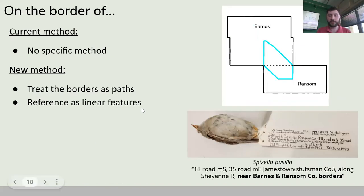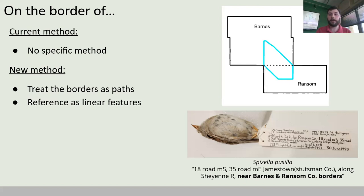Finally, we have On the Border Of. Here we have a specimen described as near Barnes and Ransom County borders — a common locality description. When you're at the intersection of two municipal boundaries, very rarely is there a line drawn in the sand telling you exactly where one county stops and another starts. I've taken the linear feature that is the literal intersection of the Barnes and Ransom County border and georeferenced that. Using the blue shape, we can literally define the space that is closer to the border of the two counties as opposed to the other boundaries of the counties themselves. This gives shape to an amorphous concept that didn't have a method for describing it in the first place.